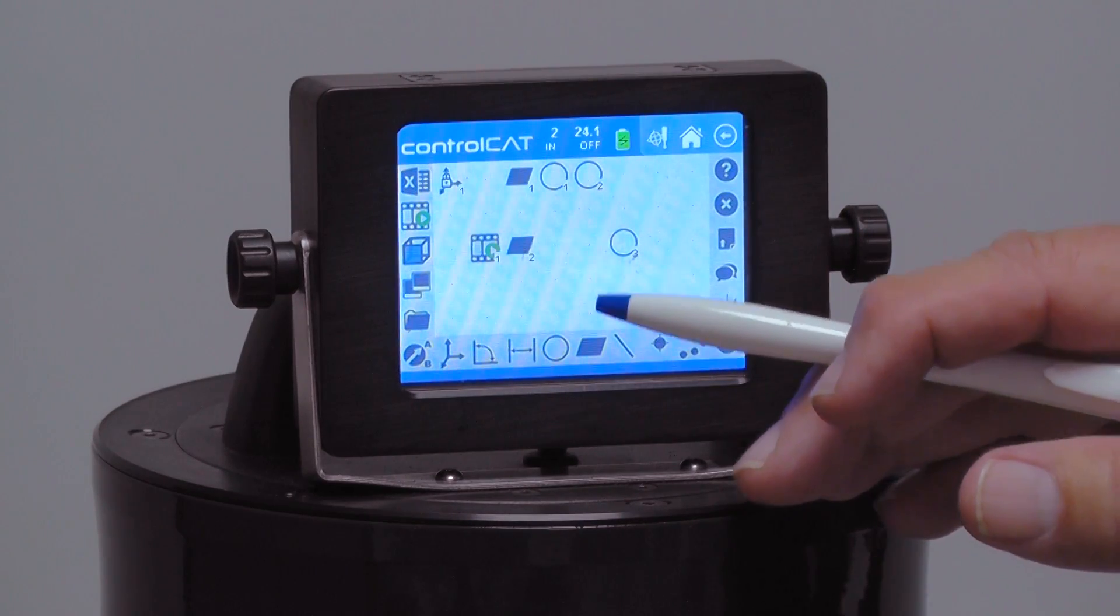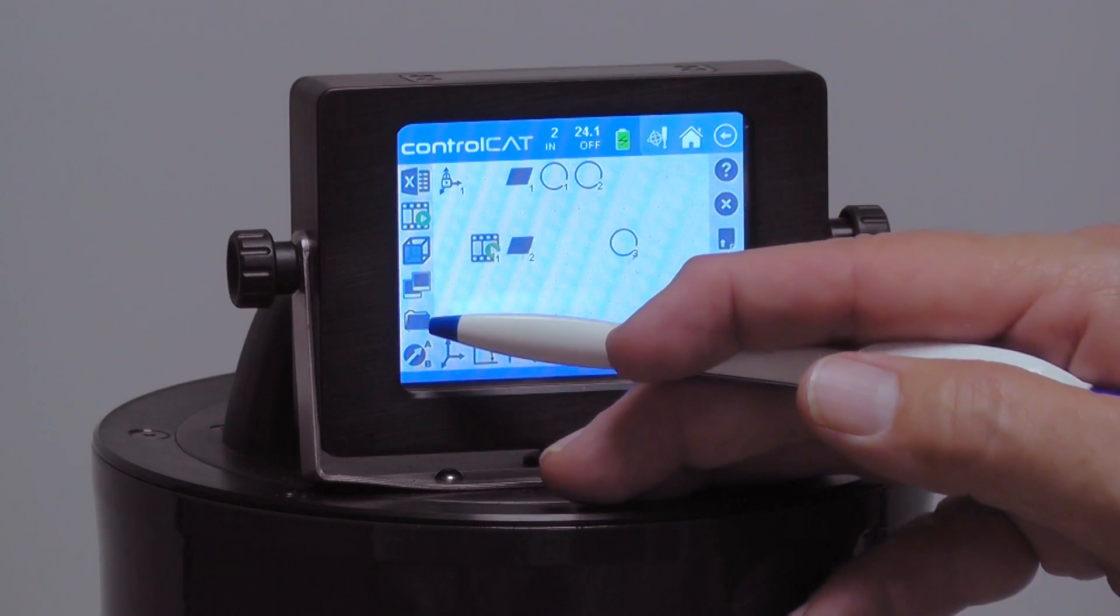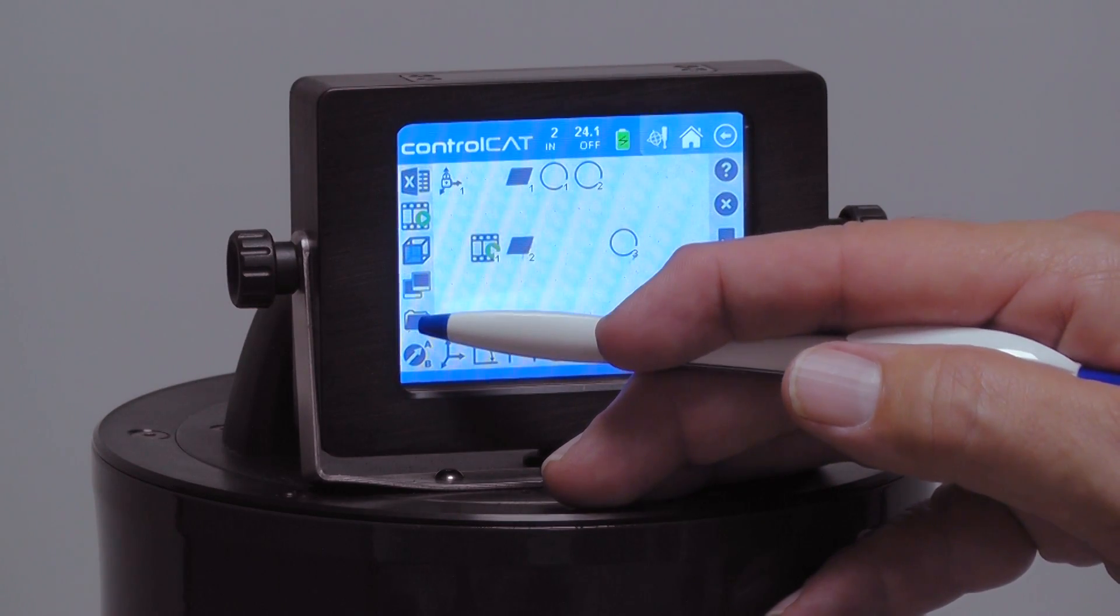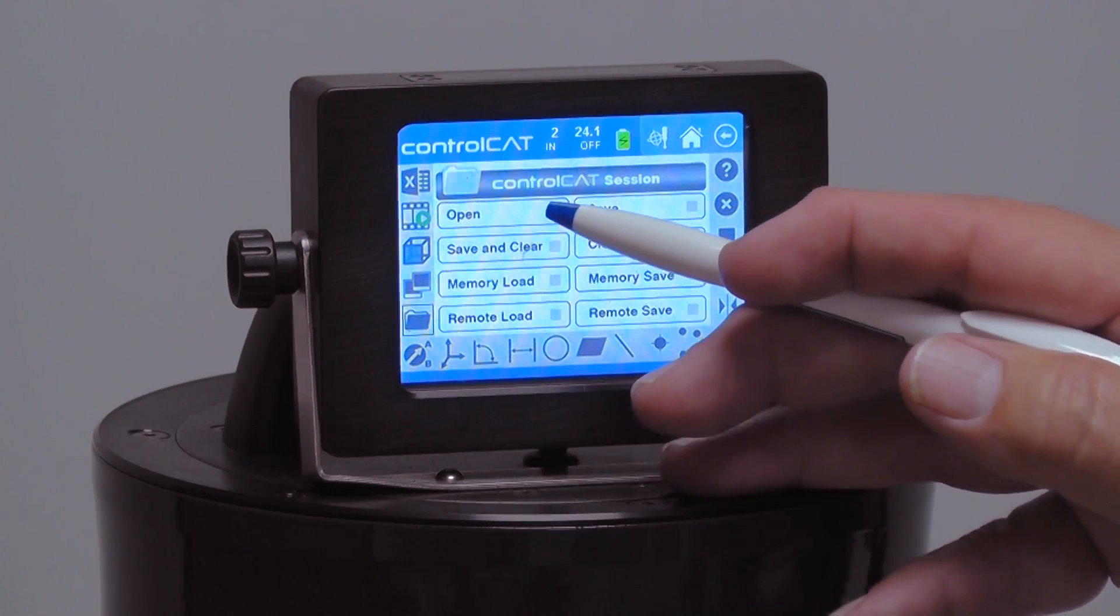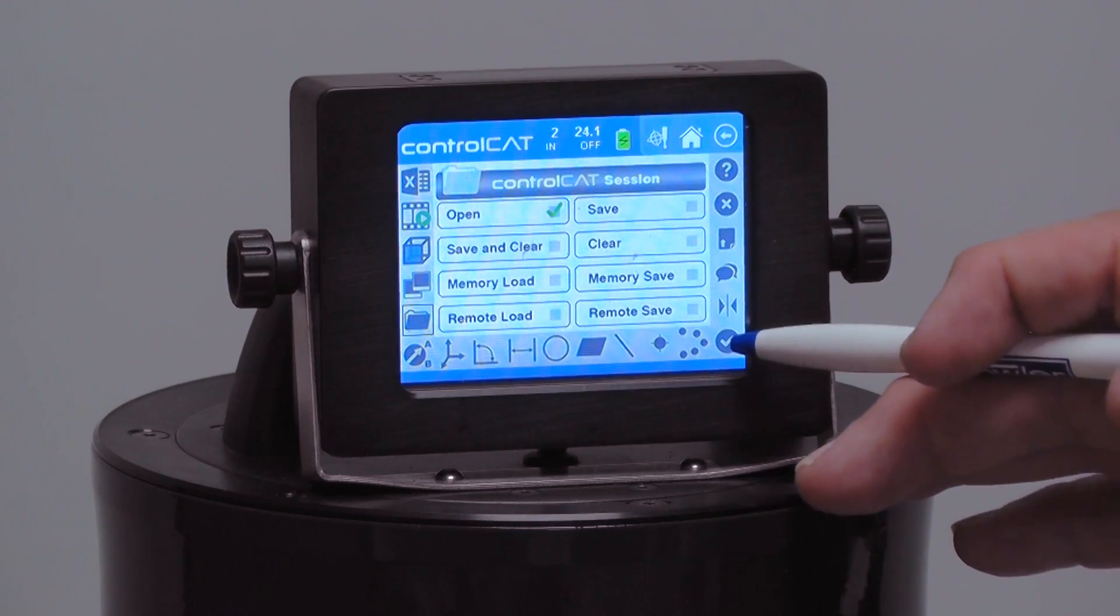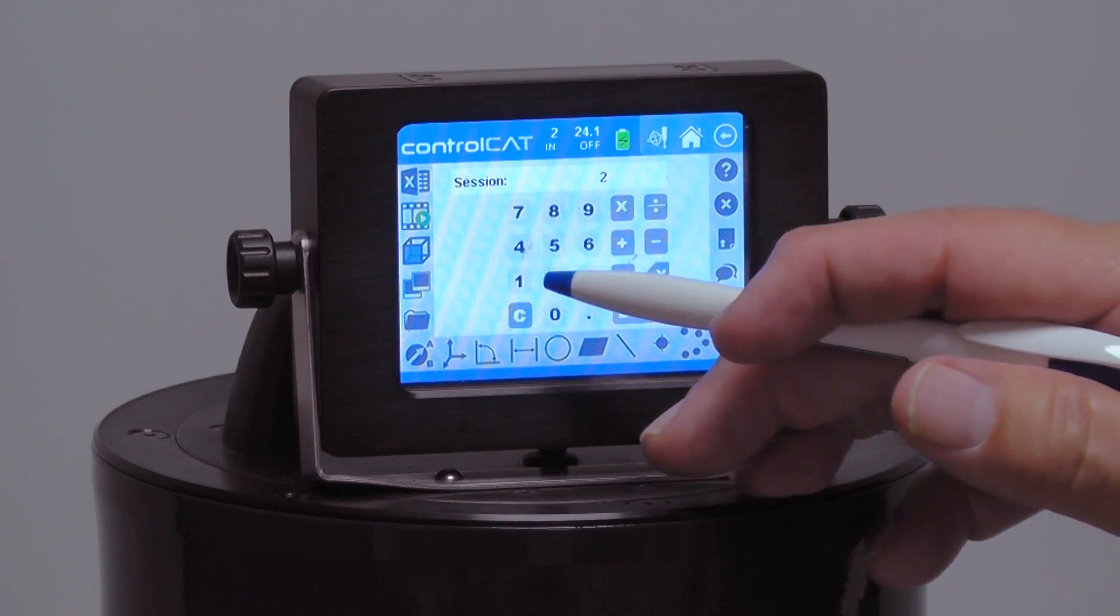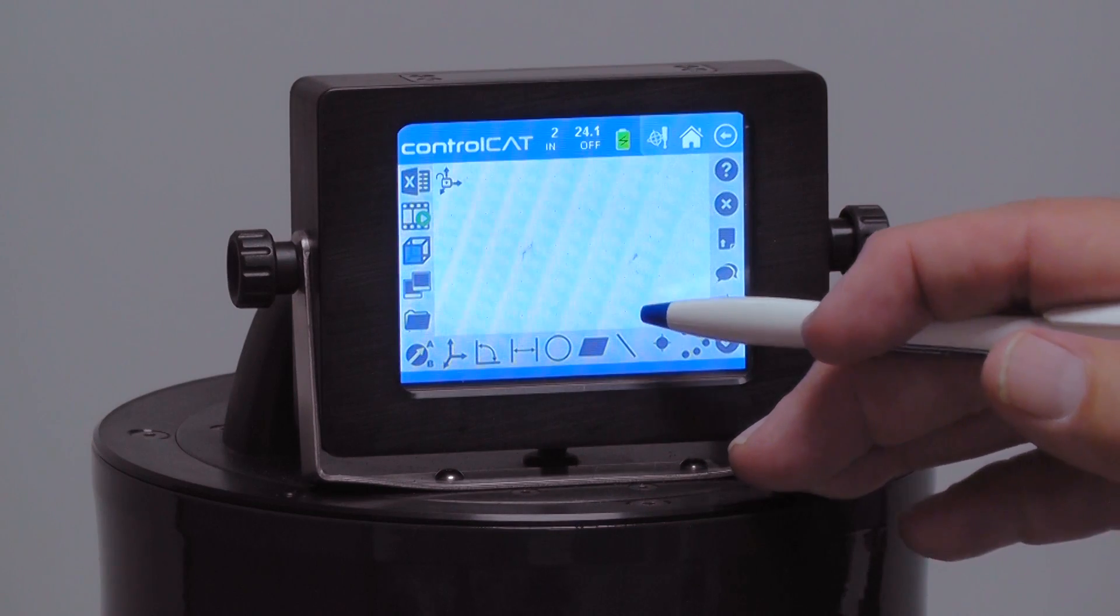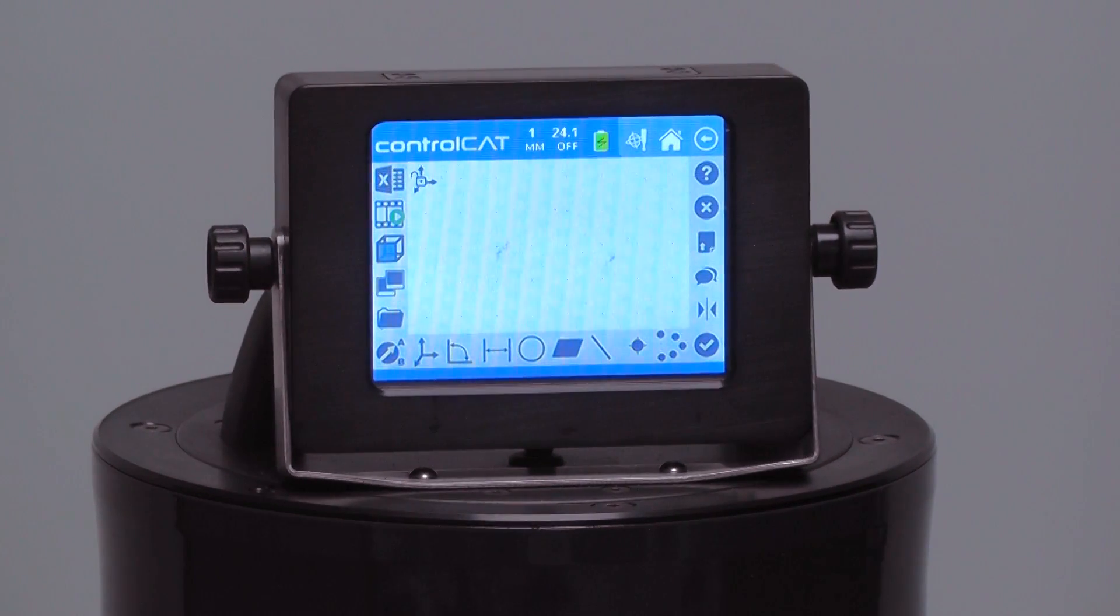So in this case I want to go back to session number one, so I'll highlight the folder again and hit open, and I'll go back to session number one. So this is a blank session, and this is where we would start taking measurements.